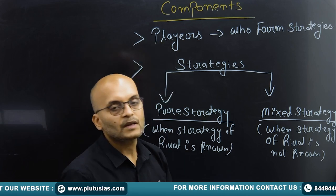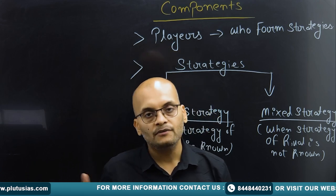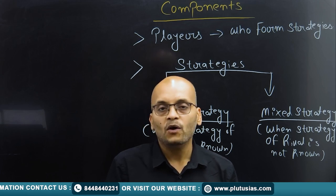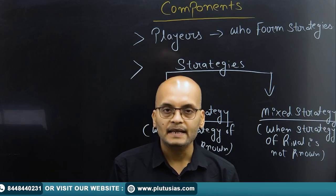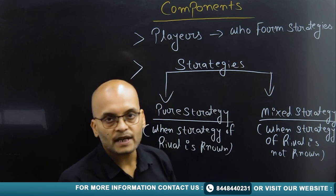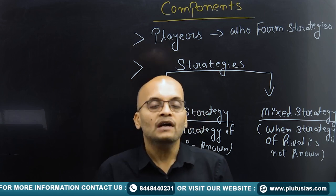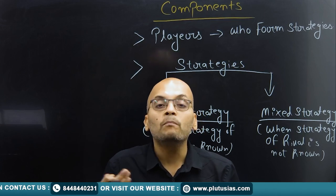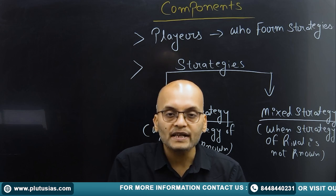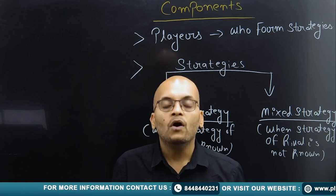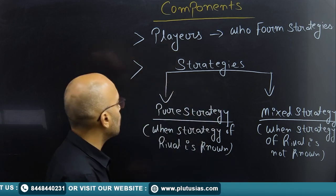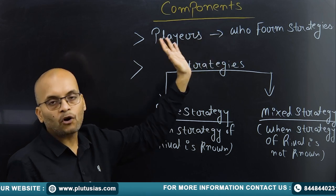Game theory has certain components. The first component is players. Players can be firm A and firm B, two countries, two teams, or two friends — whatever the scenario is. What a player does here is make a strategy. Firm A will make a strategy to earn more profit or to defeat firm B, and firm A forms strategies to counter its rival.